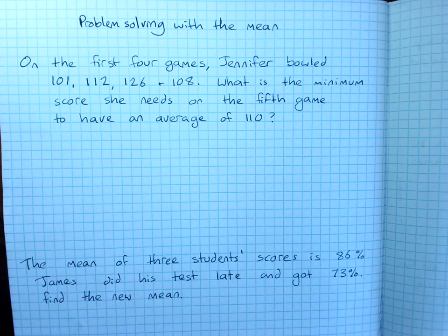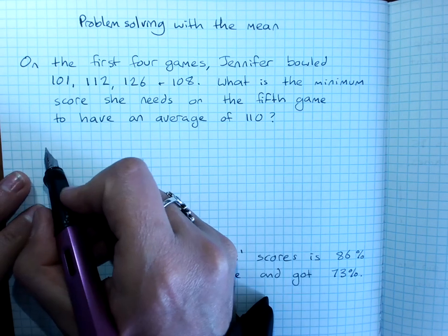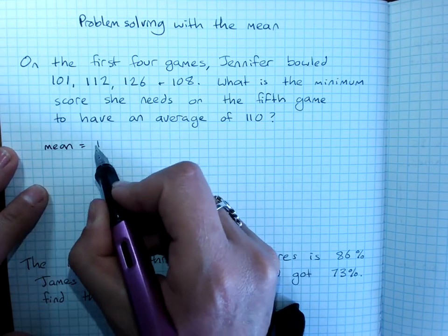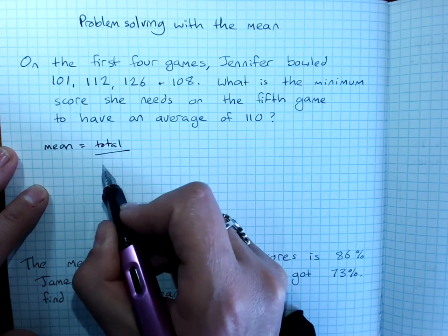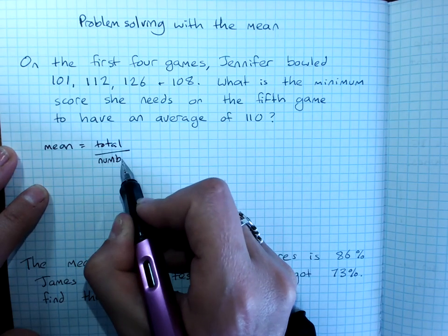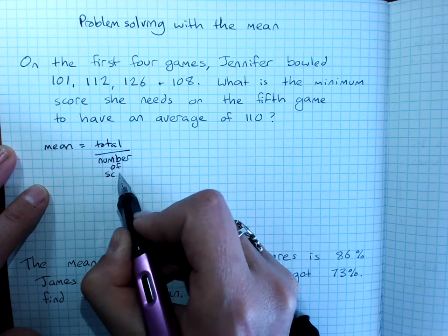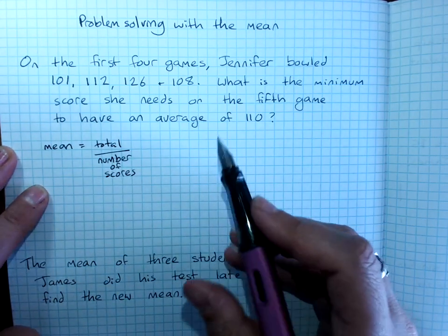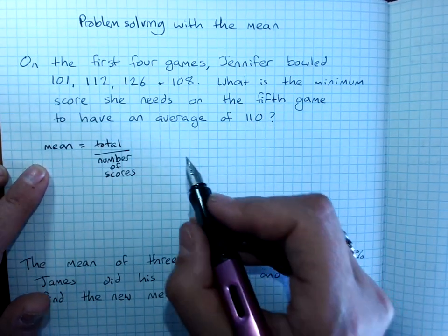There's a couple of ways we can work this out. Remember that the mean is the total divided by the number of scores. So, we want an average of 110.